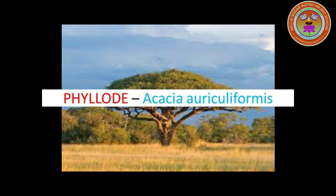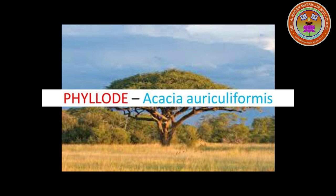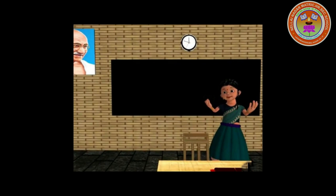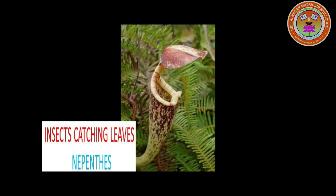Next one is Phyllode. In Acacia auriculiformis, petioles expand to form leaf-like structures. They carry out the function of a leaf, that is photosynthesis. The last one is insect-catching leaves. In insectivorous plants, like Nepenthes — called pitcher plant — the leaves are modified into a flask-like structure which is used to attract insects and other tiny animals. The inner wall of the leaf secretes digestive enzymes that help to digest the insect and extract the nitrogen needed for the plant. Example: Nepenthes.